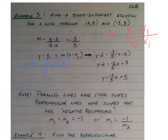Either point works, and we find that the final equation in slope-intercept form is y equals negative 3 fifths x plus 5.